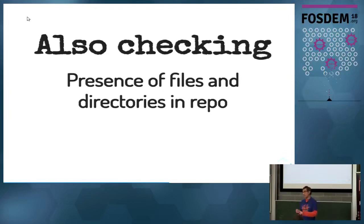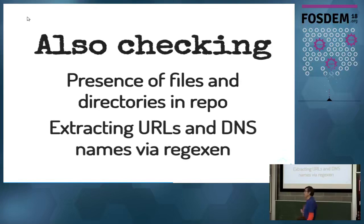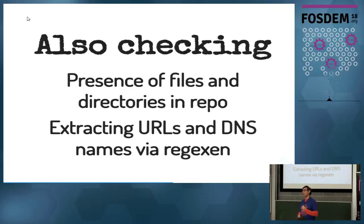At the very beginning I check three things: first, they have a README; second, they have a license file — because this is all free software; and third, they must have a .gitignore file as a best practice. Then I parse the README and tell them to include their Docker Hub link and their deployment URL in a specific format. I extract those using regular expressions from the README and check them.